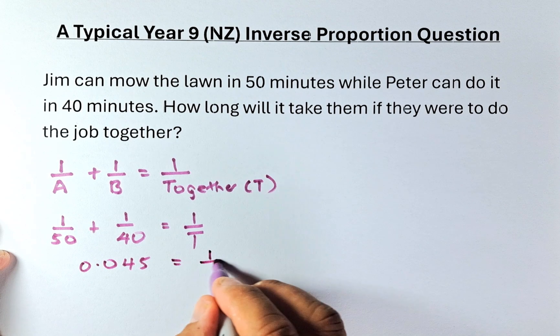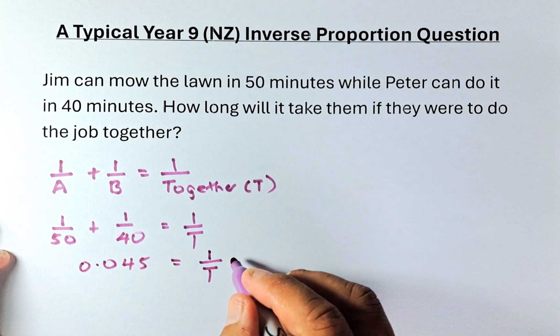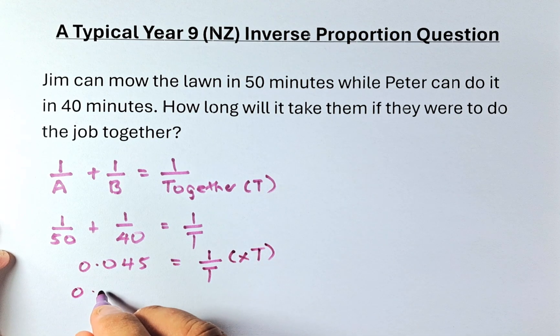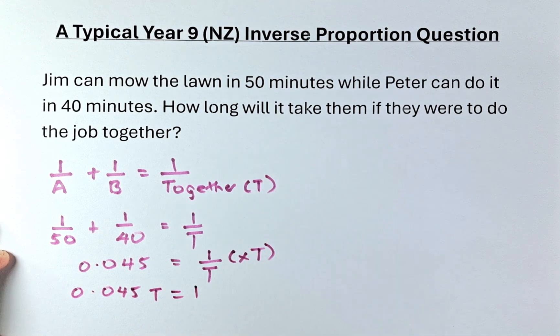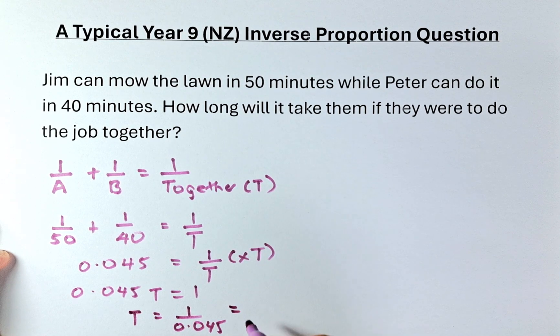That's equal to 1 over T. Now you need to use your algebra to solve this. So what we're going to do, we're going to multiply T on both sides. So we get 0.045 T is equal to 1. And last but not least, to get your T or your time together, you have to take time equals to 1 divided by 0.045. And the answer is going to be, if you put your calculator, it's going to be 22.22 minutes.